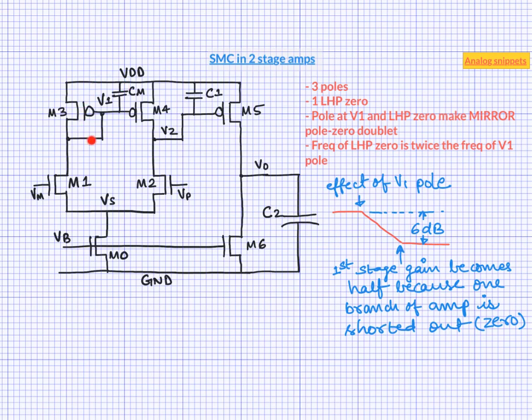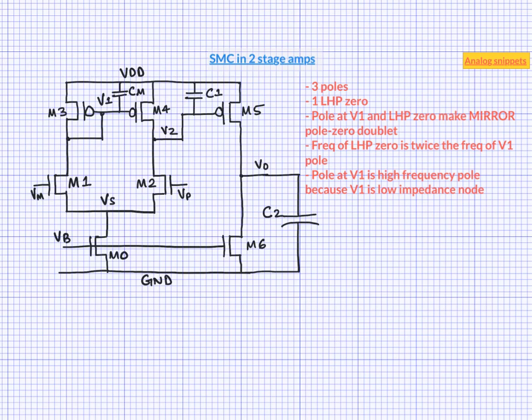At the same time, the pole at V1 is a high frequency pole because of the presence of this diode connected transistor which makes this node a low impedance node. Long story short, although there are three poles in this circuit, we can ignore the pole at node V1.